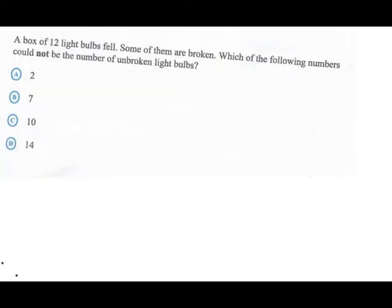Now let us reason out this final question here. A box of twelve light bulbs, some of them are broken. Which of the following numbers could not be the number of unbroken light bulbs? So here we go again guys, could not be, and unbroken. If some are unbroken, that means some are broken.